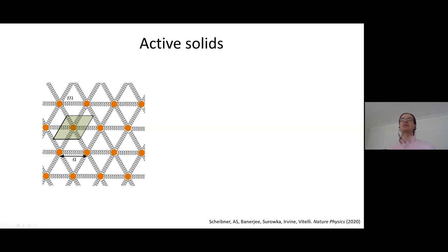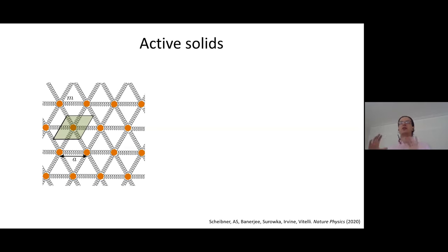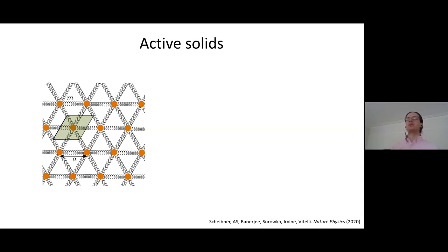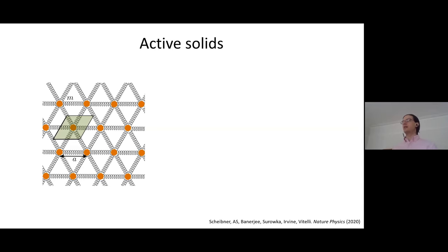What I want to talk about now is what happens when you put these springs inside a material. This is what we usually think of as a solid — a bunch of masses connected by springs. Usually we think of the masses as atoms and the springs as interatomic interactions. But from the point of view of a metamaterial, we think at much larger scales: in an active matter system, these could be large molecules and molecular motors designed to have this unusual spring force law, or at an even larger scale, macroscopic constituents like electric motors or propellers attached to each spring. We can translate the force law of a single spring into the mechanics of the solid.